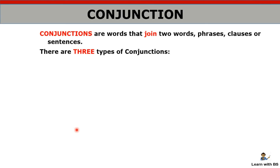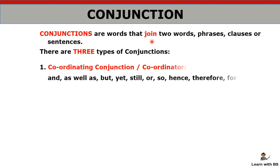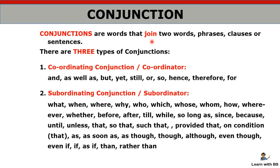Then we have conjunctions — nothing but joining words. They join two or more words, phrases, or clauses. We have three types of conjunction. Coordinating conjunction — when you divide the two parts, both parts remain meaningful. Subordinating conjunction — when you separate the two parts, one part will be meaningful and the other will not.